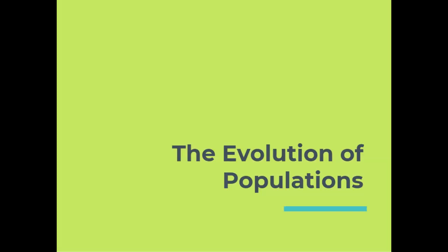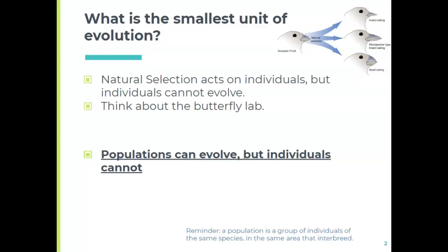Now that you've got natural selection down and speciation down, we're going to talk about how populations actually evolve. While natural selection can act on one individual, one individual does not evolve. The smallest unit of evolution is a population — a group of the same species that lives in the same area and can interbreed.